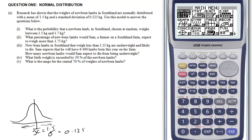Okay, so the first one says that we've got newborn lambs in Southland distributed with a mean of 1.5 kg and a standard deviation of 0.125 kg. So my first thing is to make sure that my units are the same because that would be a really stupid thing to get wrong.